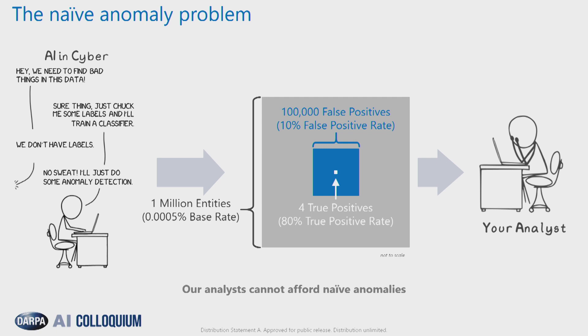So what is the naive anomaly problem? Imagine pairing a cyber expert and an AI expert. Quite quickly, they're going to have a conversation and decide that it probably comes down to differentiating good from bad — a binary classification problem. The AI expert is going to say, if you just give me some labels, I can do this. And the cyber analyst is going to chuckle, because the low base rate in the field makes getting good labels hard, it takes a lot of time and effort, and in general there's just a very large class imbalance.